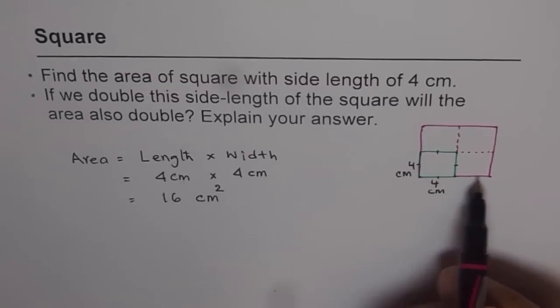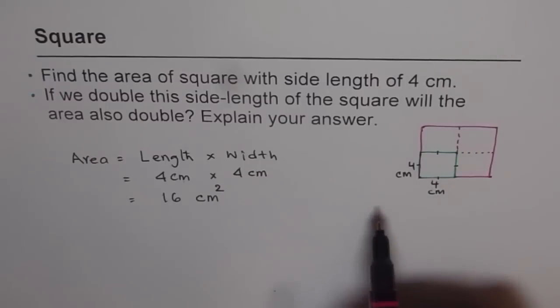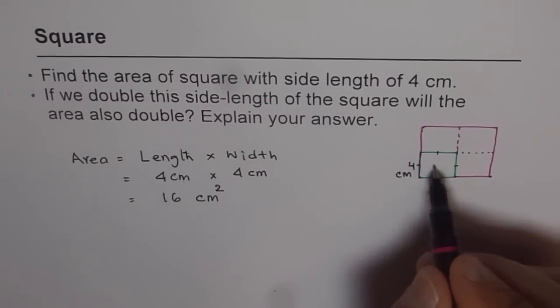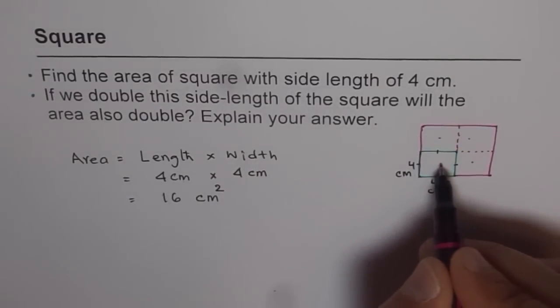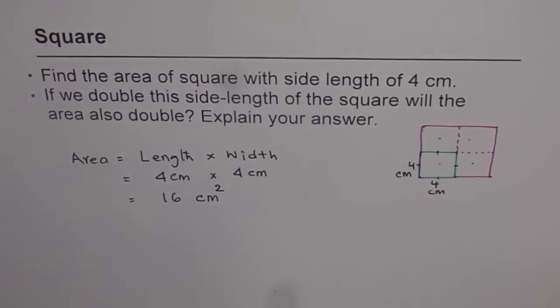If I double my length and the width, area becomes how many times? Well, you can see there are 4 equal squares. So it is 4 times the original. Not double. It is 4 times the original square. That is great.